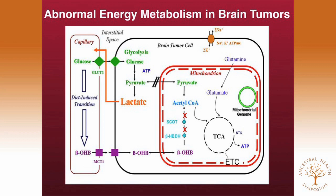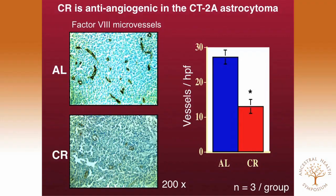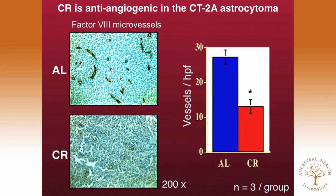We've done a lot of work in mice on calorie restriction. This shows an ad libitum-fed mouse compared to 40% calorie restriction over about 12 days starting three days after tumor implantation. We can clearly get reductions anywhere from 65 to 90% depending on how we do this. Inside the tumor cells, calorie restriction is powerfully anti-angiogenic — blood vessels are significantly reduced. Nothing is more powerful than calorie restriction in reducing tumor vascularization. It's also pro-apoptotic, killing tumor cells through programmed cell death mechanisms.